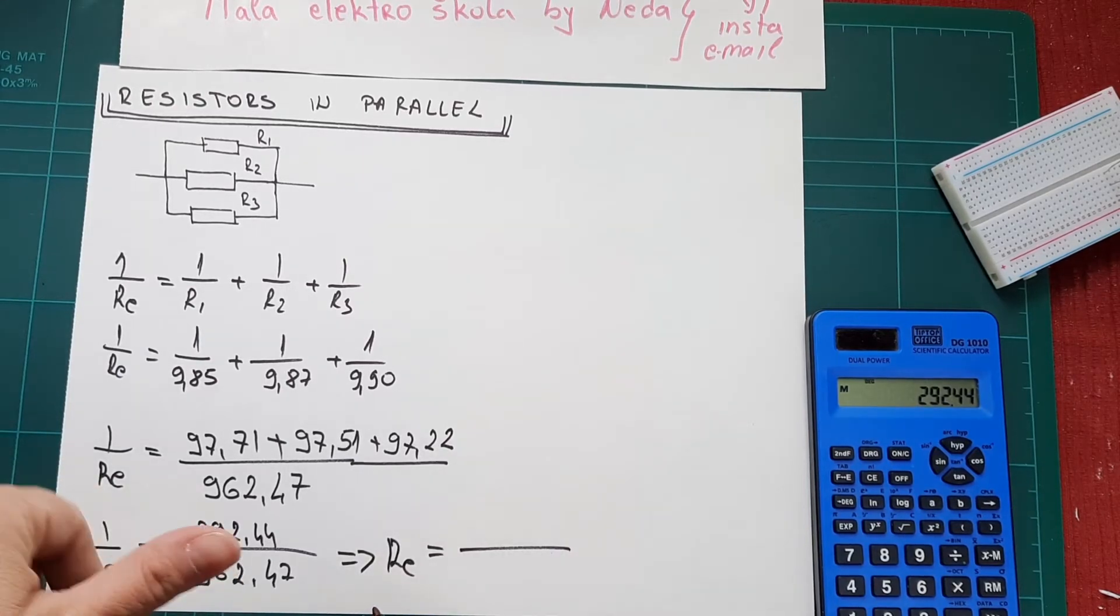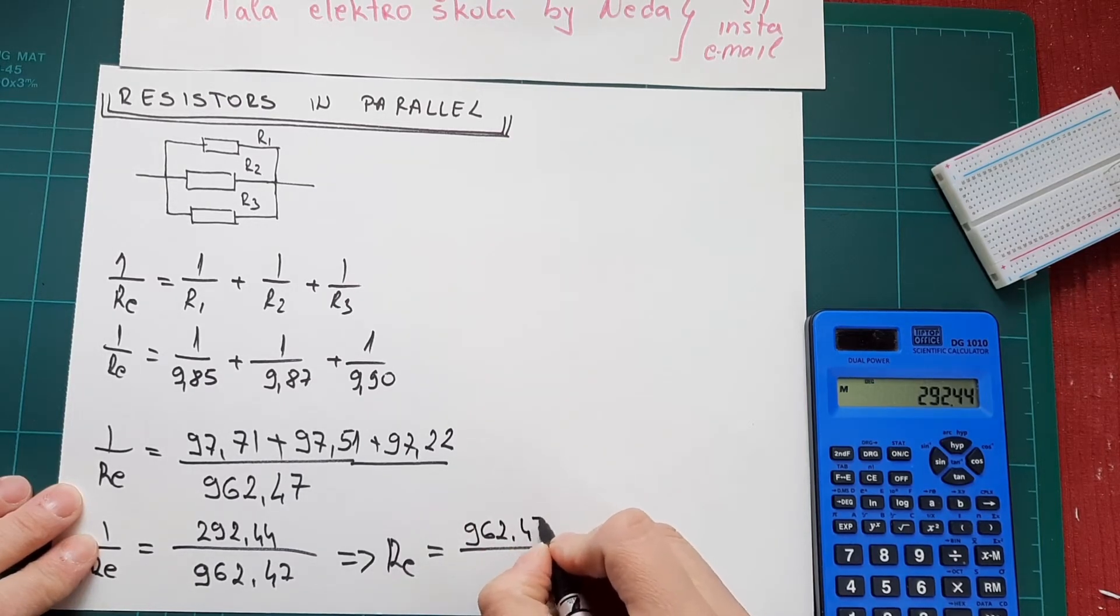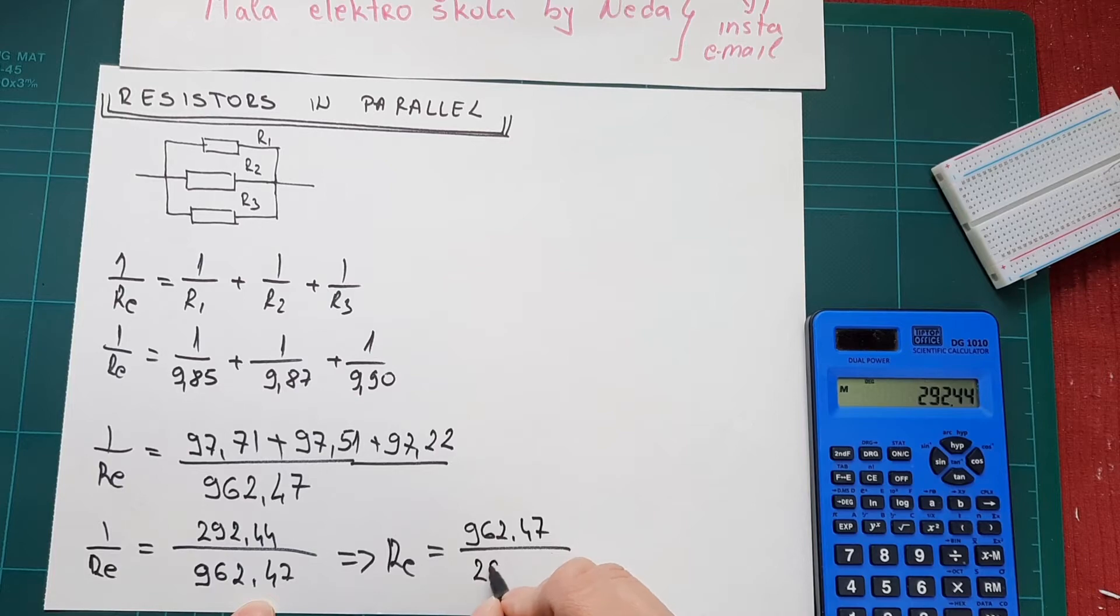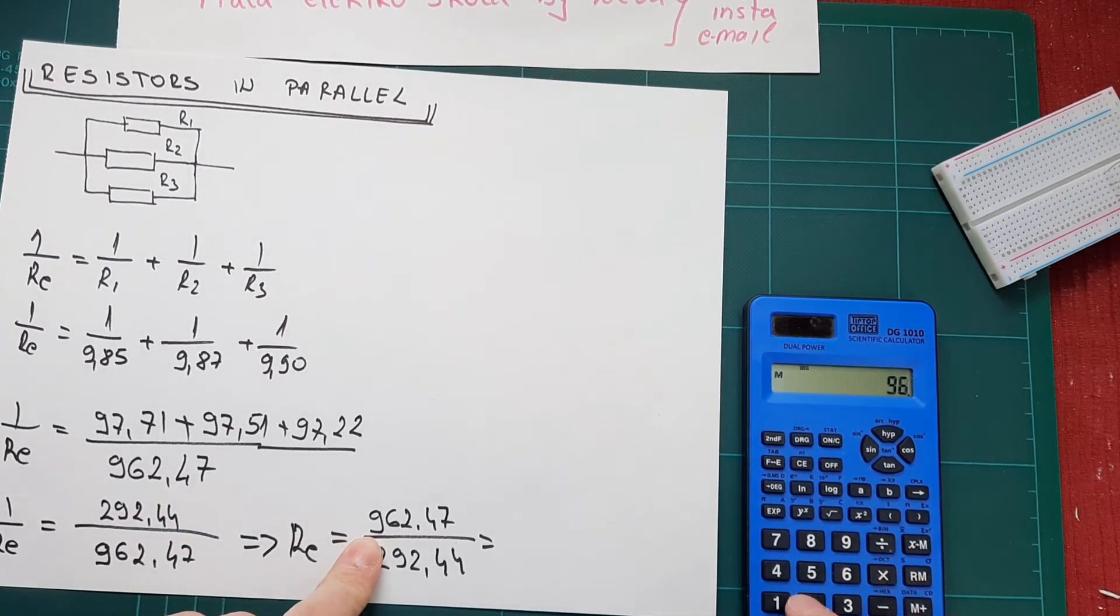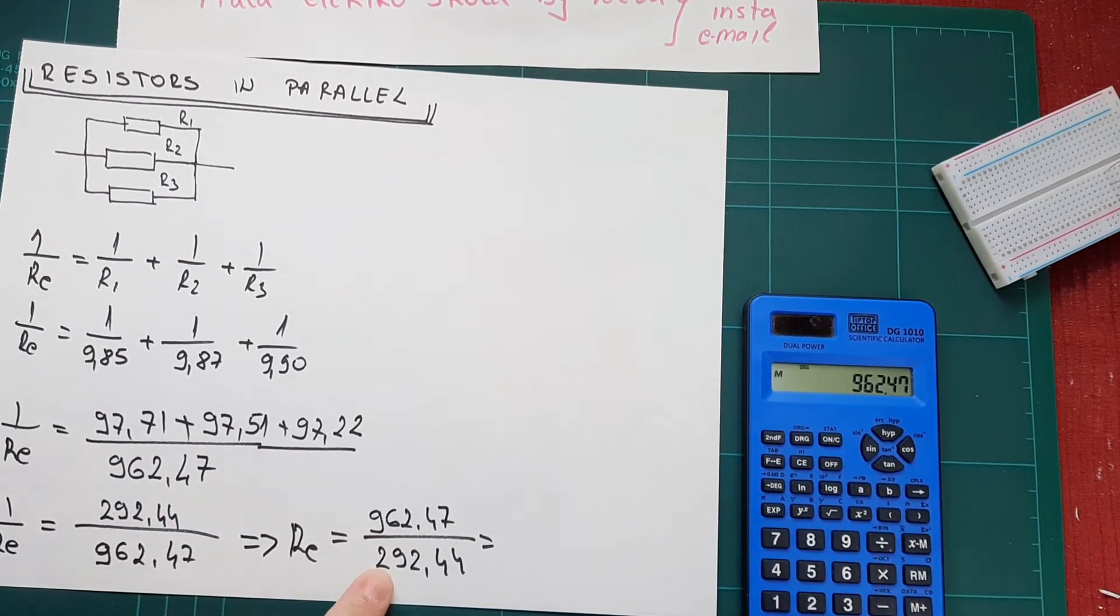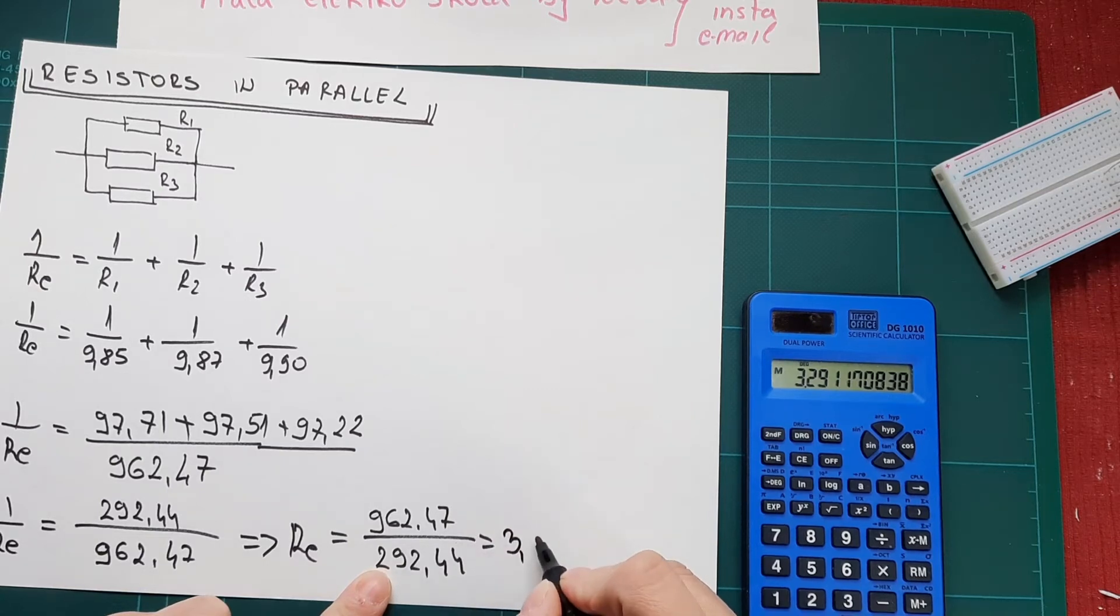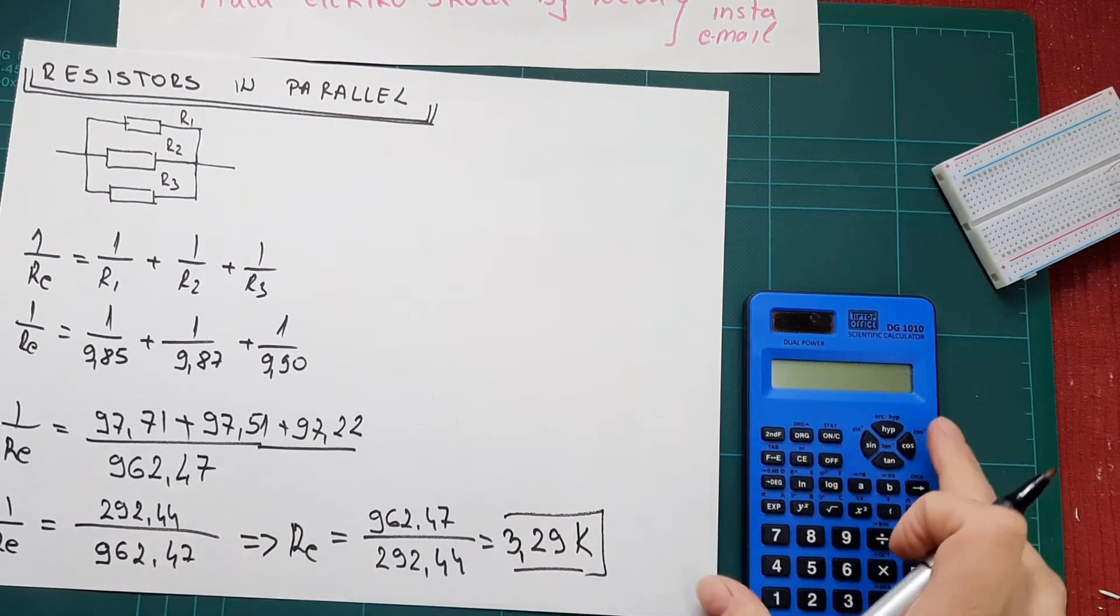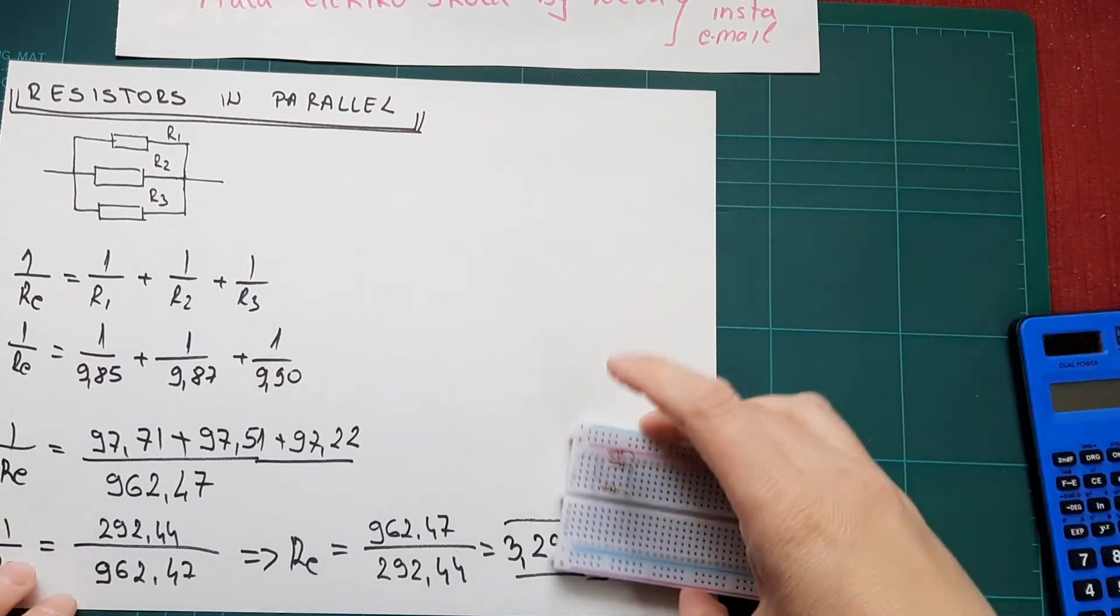We just switch this value. 962.47 divided by 292.44, we got 3.29 ohms. That is our value. If we connect them in parallel, as I have already done here...